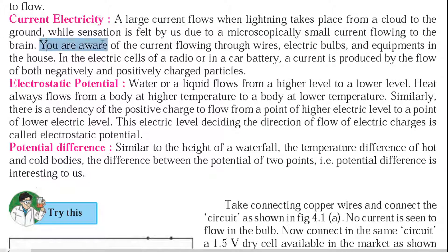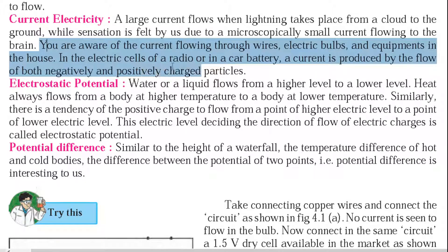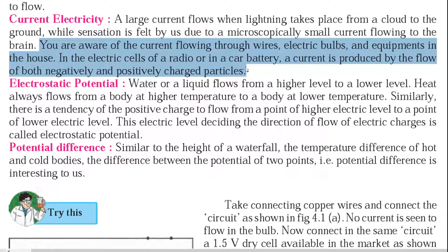You are aware of the current flowing through wires, electric bulbs, and equipment in the house. In the electric cells of a radio or in a car battery, a current is produced by the flow of both negative and positively charged particles. So if you are aware of these electric devices, electric flow involves positive or negative charges attracting and flowing.